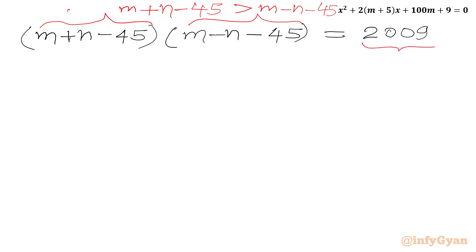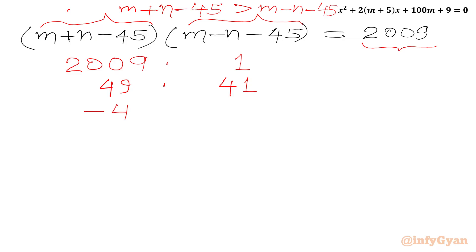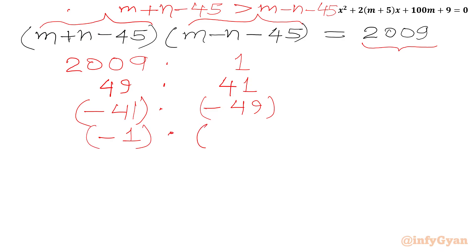Now we factor 2009. We can write: 2009 × 1 = 2009, or 49 × 41 = 2009, or (-41) × (-49) = 2009, or (-1) × (-2009) = 2009. Since the first bracket must be greater than the second, we take only those cases where the first factor is larger.